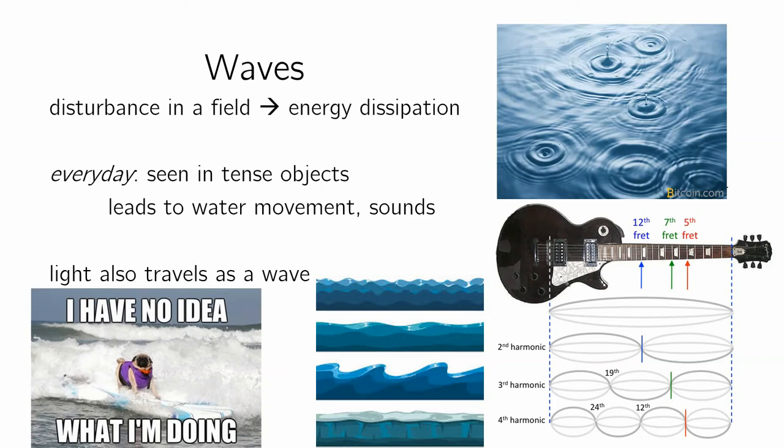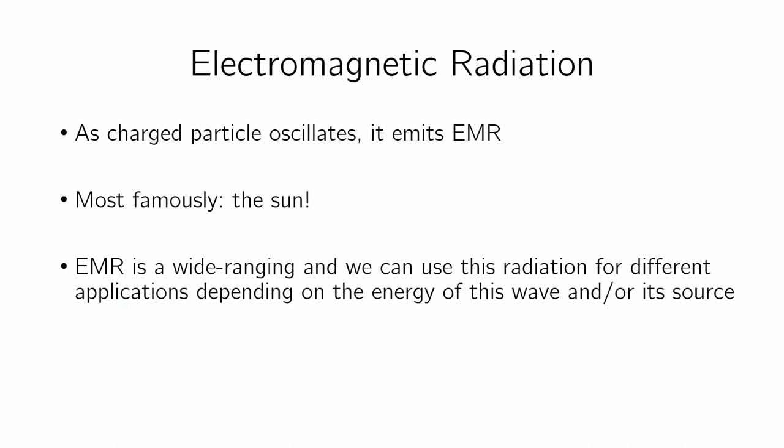Light travels as a wave. You can think of light as having these invisible waves — you won't be able to see them because the waves themselves are very tiny. Light is an example of what we call electromagnetic radiation, or EMR. Electromagnetic radiation carries a whole gamut of different types of radiation. As particles oscillate, they emit this radiation. The sun emits electromagnetic radiation and we see portions of it as light. There are many different sources of EMR and we can use it for a whole bunch of different applications.